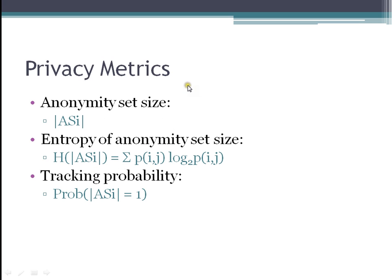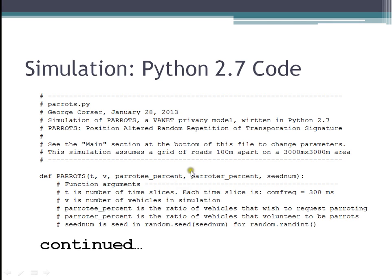The privacy metrics collected as the simulation iterates are: the anonymity set size — basically the number of cars in the group of any given vehicle; the entropy of the anonymity set size using a standard equation; and the tracking probability, i.e., the probability that the set size is 1, meaning the vehicle is a lone ranger. The simulation parameters include: number of time slices, number of vehicles, what percentage of cars are asking to be parroted, what percentage are willing to parrot other cars, and the seed number for random number generation.